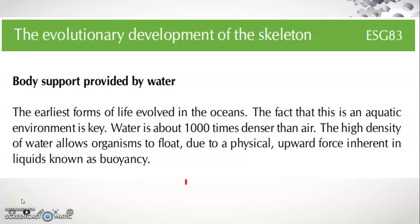The earliest forms of life evolved in the ocean. The fact that this is an aquatic environment is key. Water is about 1000 times denser than air. The high density of water allows organisms to float due to a physical upward force inherent in liquid — something floats in water. This property is called buoyancy.